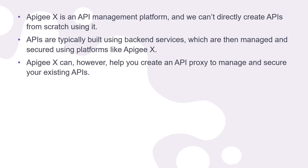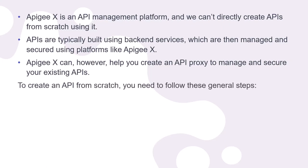Apigee can, however, help you create an API proxy to manage and secure your existing API. To create an API from scratch, you need to follow these general steps. First, define the API — determine the purpose, functionality, and resources your API will provide, design the API endpoints, request and response formats, and define the data models.